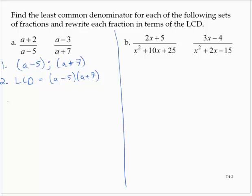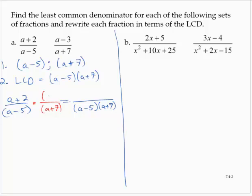Now rewriting each of the fractions. For (a + 2) over (a - 5), I think of that (a - 5) as being a factor. In the end, I need the denominator to be (a - 5)(a + 7), so I think about what's missing — I need a factor of (a + 7). And so I have to multiply the numerator by (a + 7) as well.